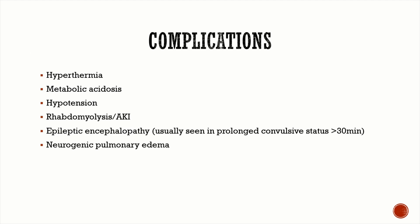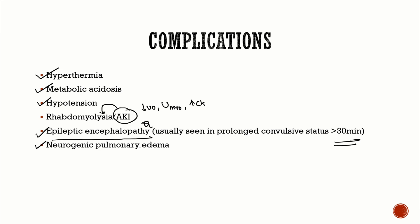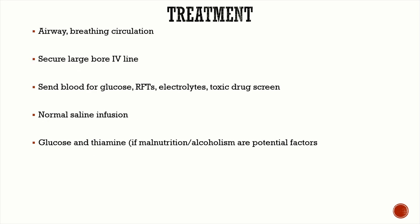The complications of status epilepticus include hyperthermia due to increased muscle activity, metabolic acidosis, hypotension, and acute kidney injury because of rhabdomyolysis — the patient will have decreased urine output, high-colored urine due to urinary myoglobin, and raised creatine kinase. When seizures last for more than 30 minutes, the patient develops permanent neurological issues, known as epileptic encephalopathy — an MCQ question. Rarely, the patient can also develop neurogenic pulmonary edema.